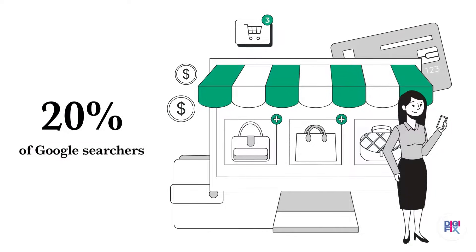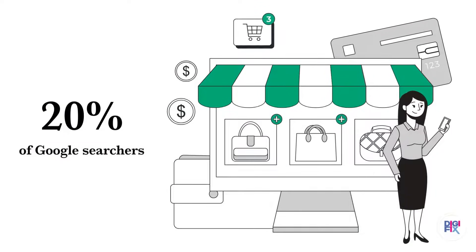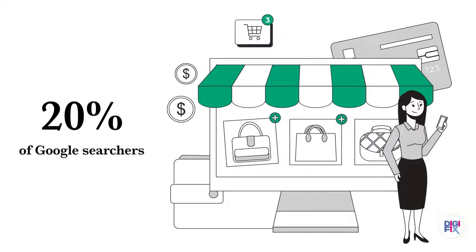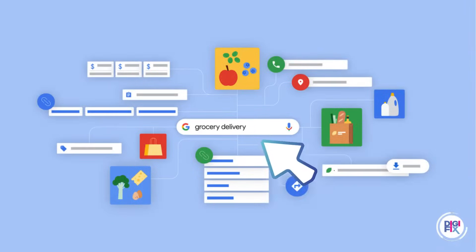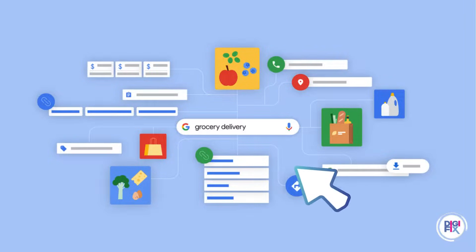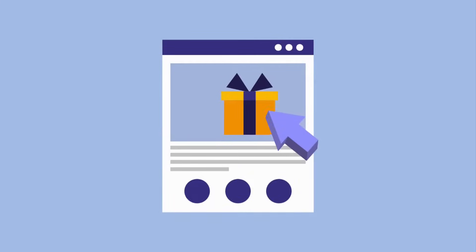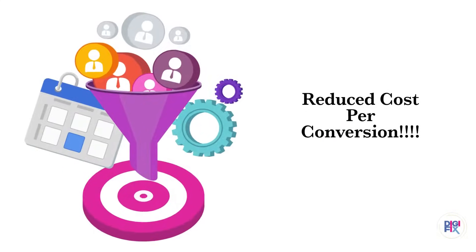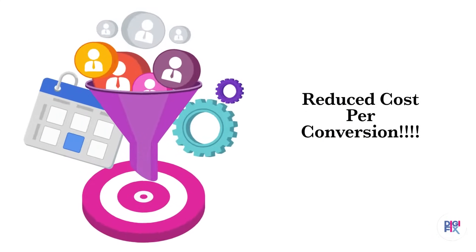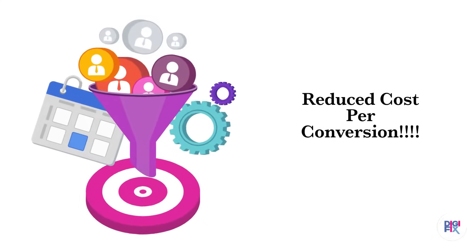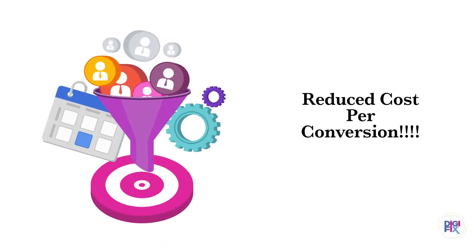It is worth noting that more than 20% of Google searches are focused on local businesses, services, and products. By using location assets in Google Ads and linking your GMB and Google Ads profiles, you can improve the relevance of your ads to searchers and improve your quality score. This, in turn, leads to reduced costs per conversion.